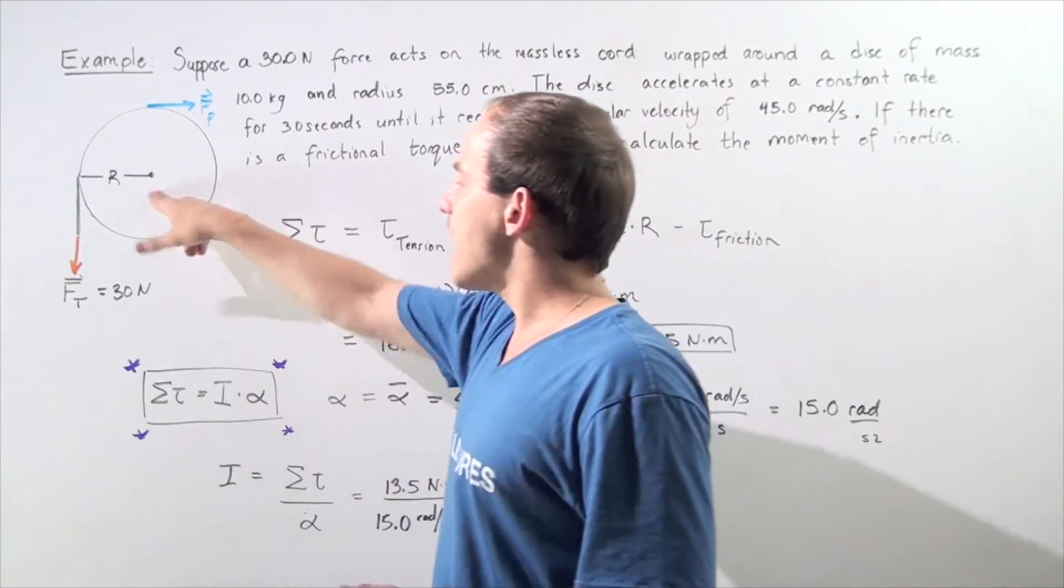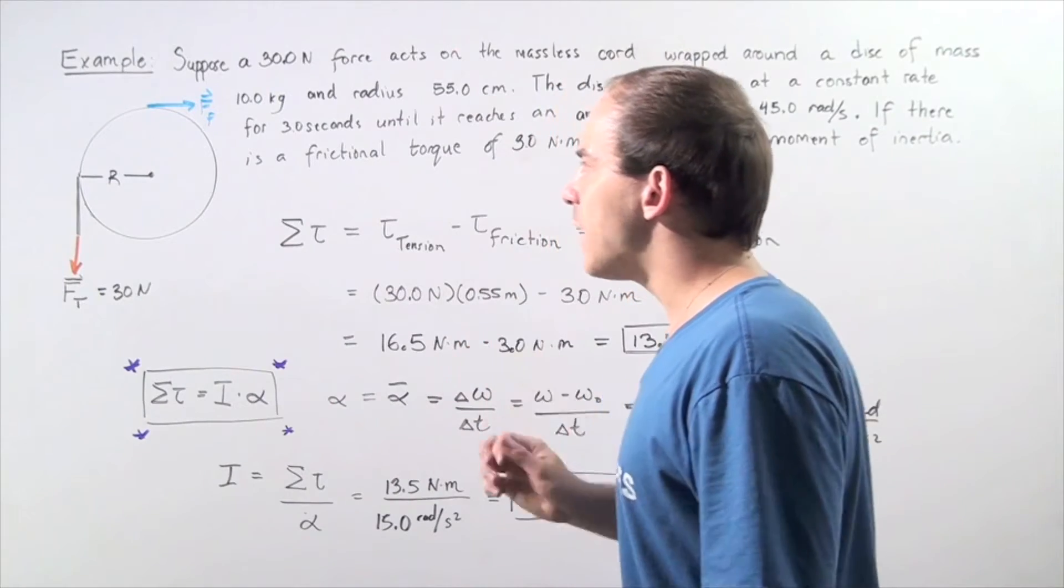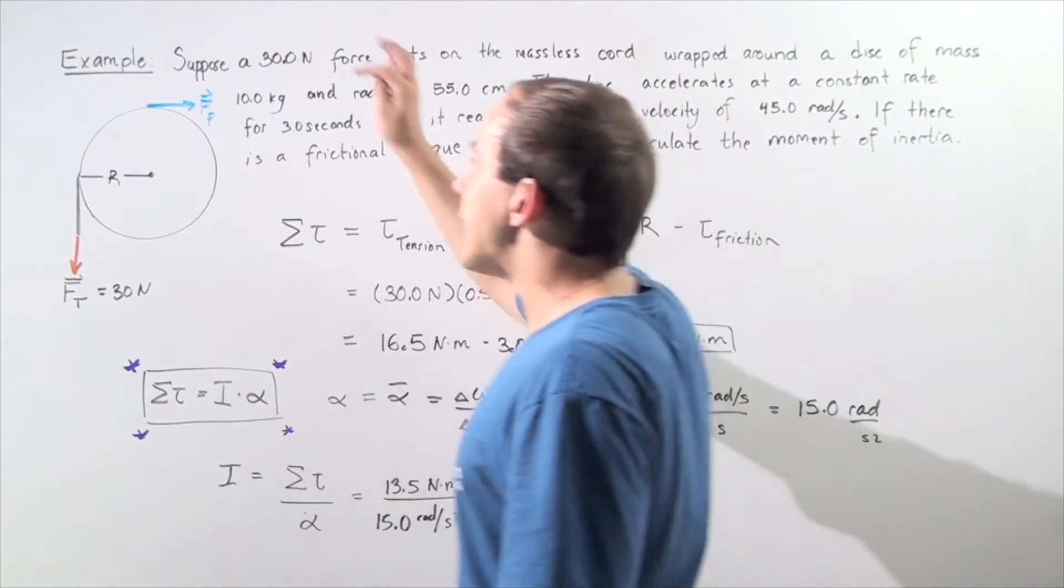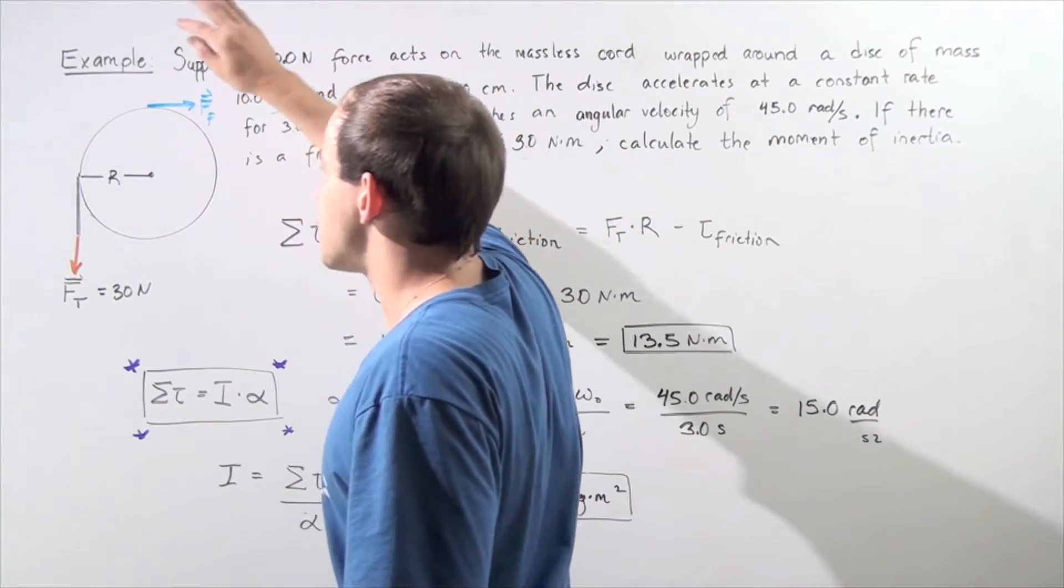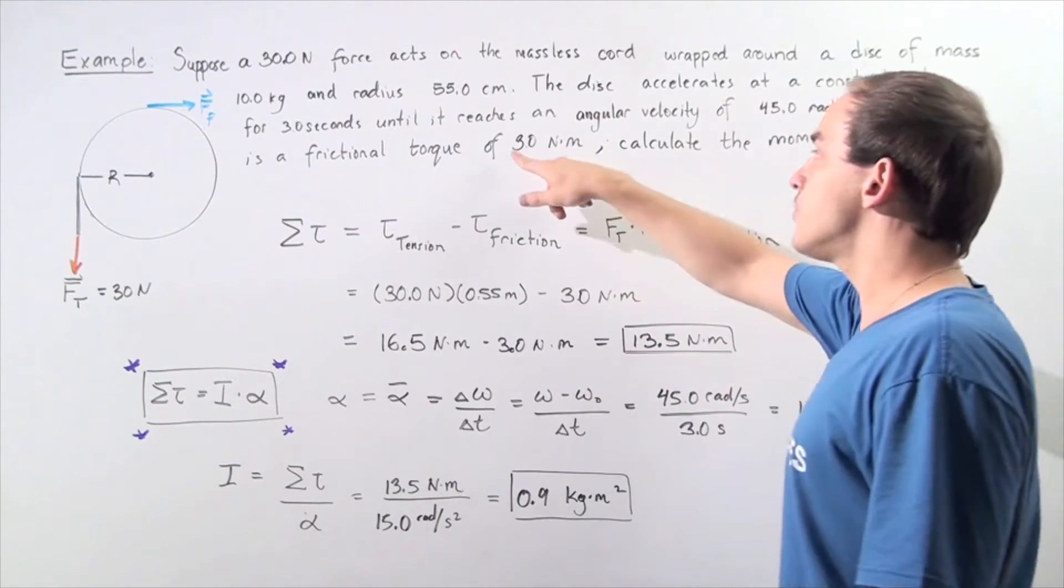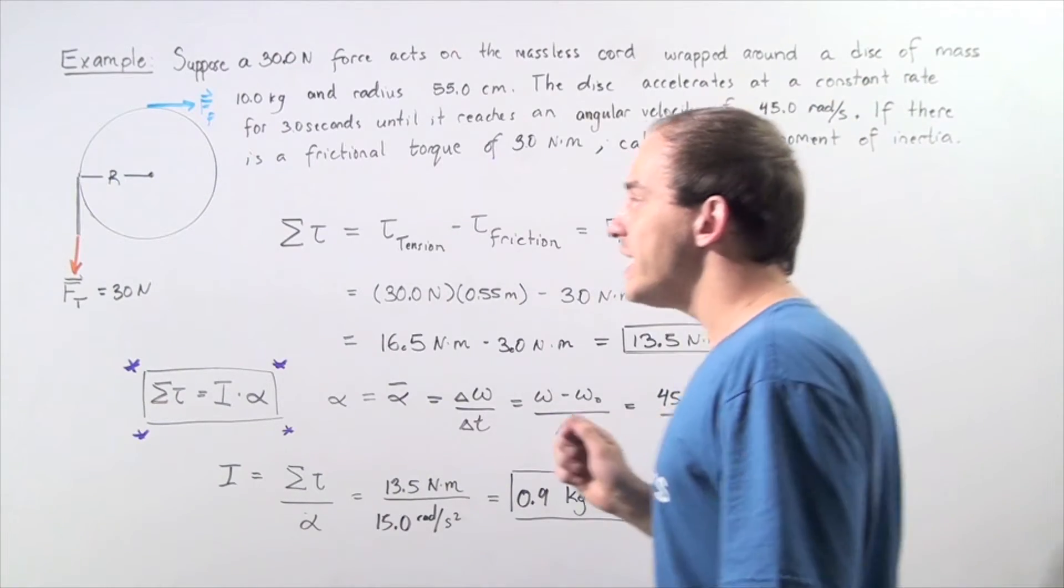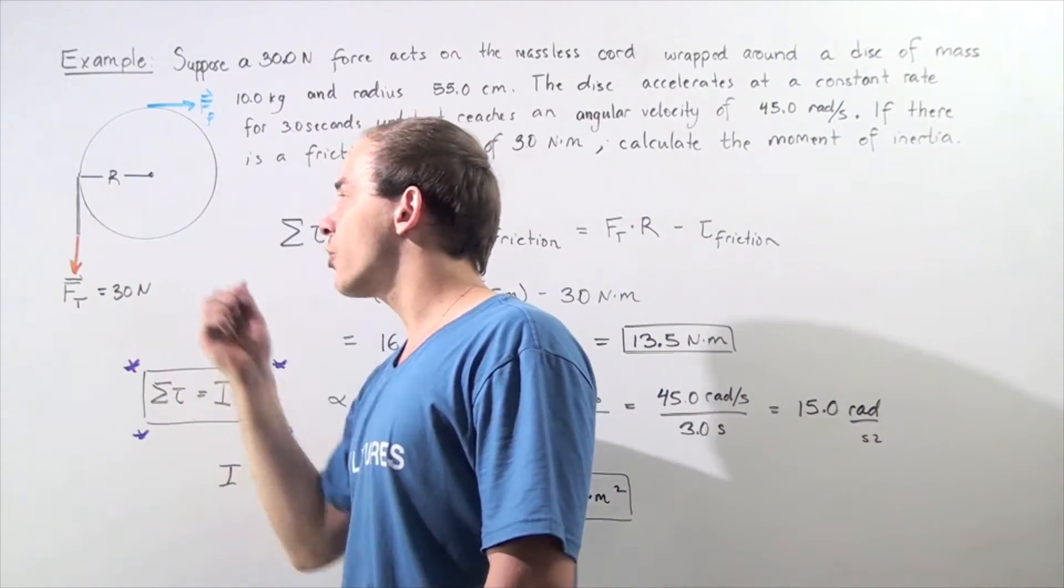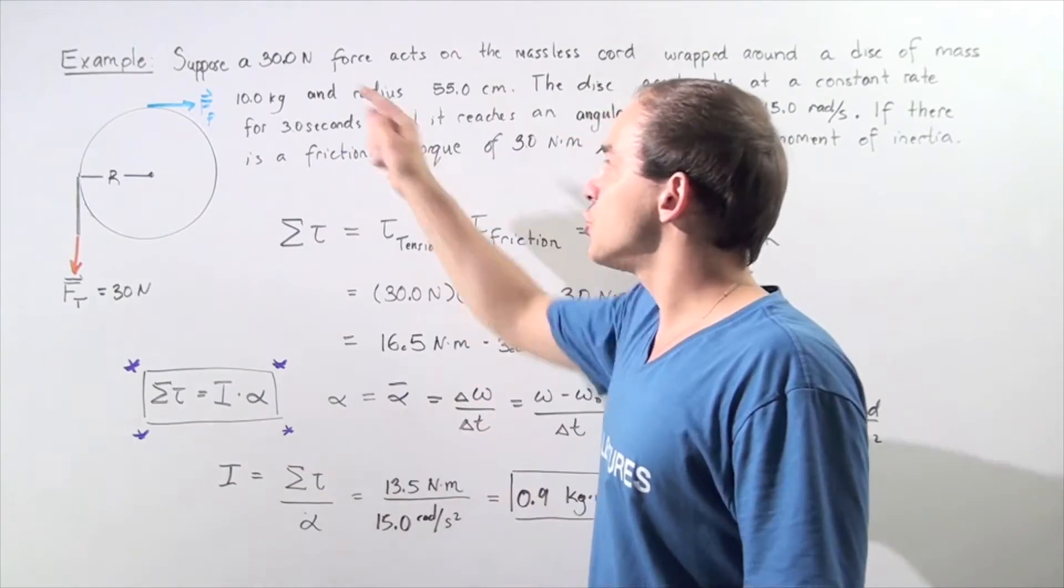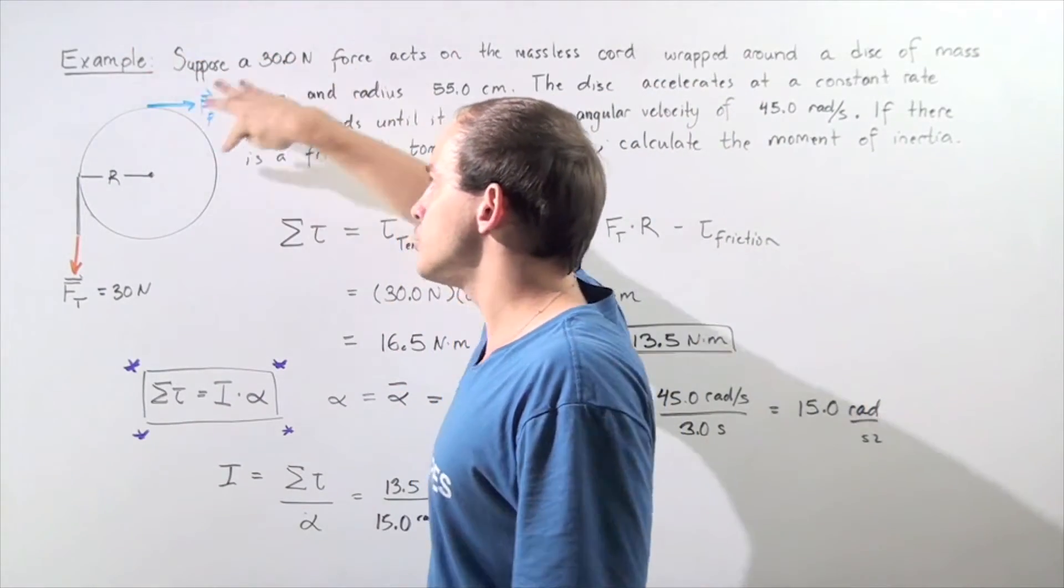Let's examine the diagram. We have the radius of 0.55 meters, the frictional force that opposes the motion and creates a torque of 3.0 Newton-meters, and the tension in the cord equal to 30 Newtons that opposes this frictional force.